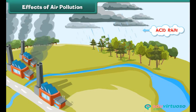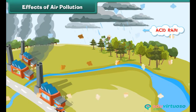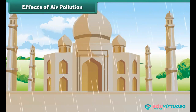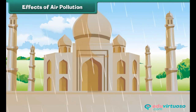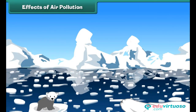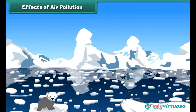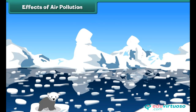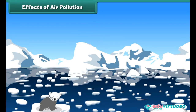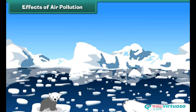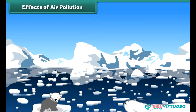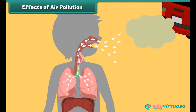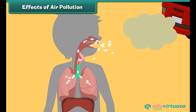Polluted air mixes with clouds in the atmosphere and brings harmful rain, also known as acid rain. Acid rain damages our buildings and monuments. Besides this, the large amount of carbon dioxide in the air increases global temperatures, which subsequently results in the melting of glaciers.